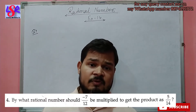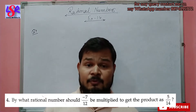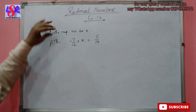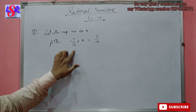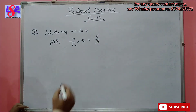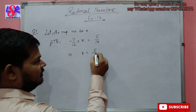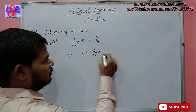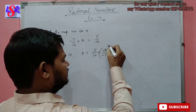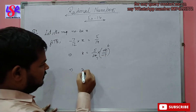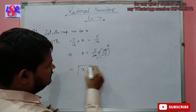In question number 4, by what rational number should minus 7 upon 12 be multiplied to get the product 5 upon 14? Let the required number be x. According to the question, minus 7 upon 12 into x equals 5 upon 14. Transposing, x equals 5 upon 14 into 12 upon minus 7. Reducing — 2 and 6, and 2 and 7 — we get x equals 30 upon minus 49 as the answer.